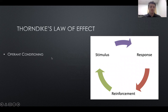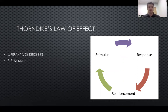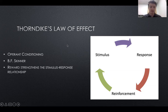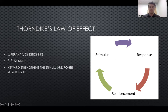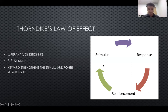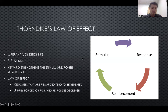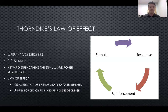Starting off with operant conditioning: a lot of people think this starts with B.F. Skinner, and Skinner certainly played a large role in the research, but this actually stems from Thorndike's Law of Effect. The idea is that reward strengthens the stimulus-response relationship. A stimulus occurs, we respond, and if that behavior is rewarded or reinforced, the bond strengthens and the response should be repeated. Responses that are rewarded tend to be repeated; unreinforced or punished responses should decrease.